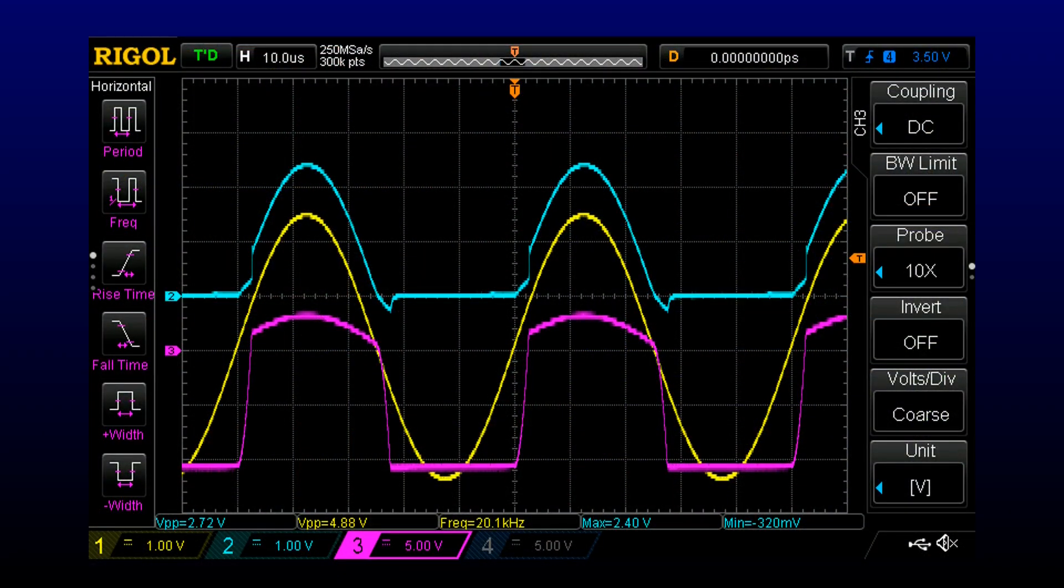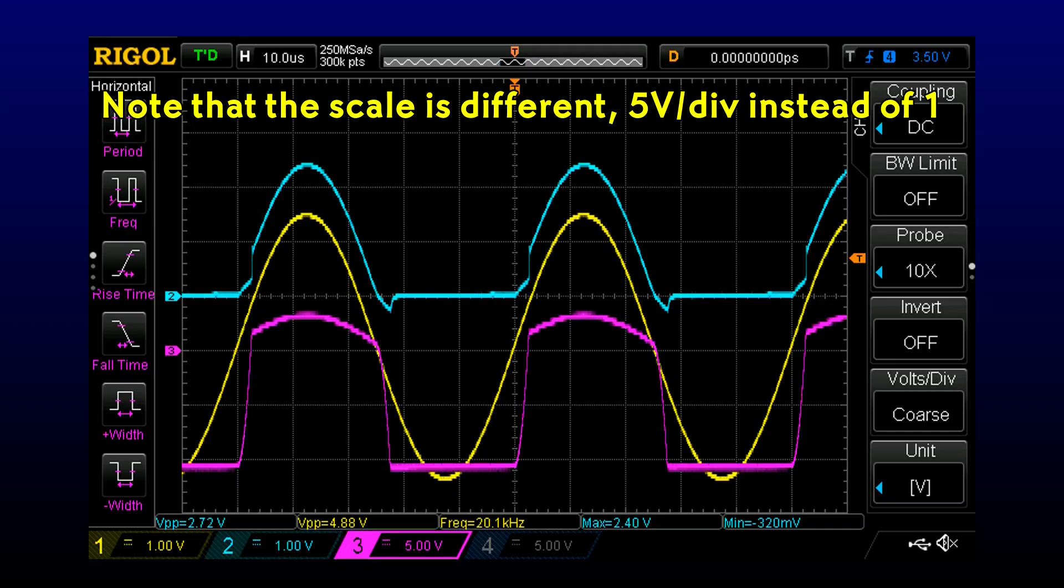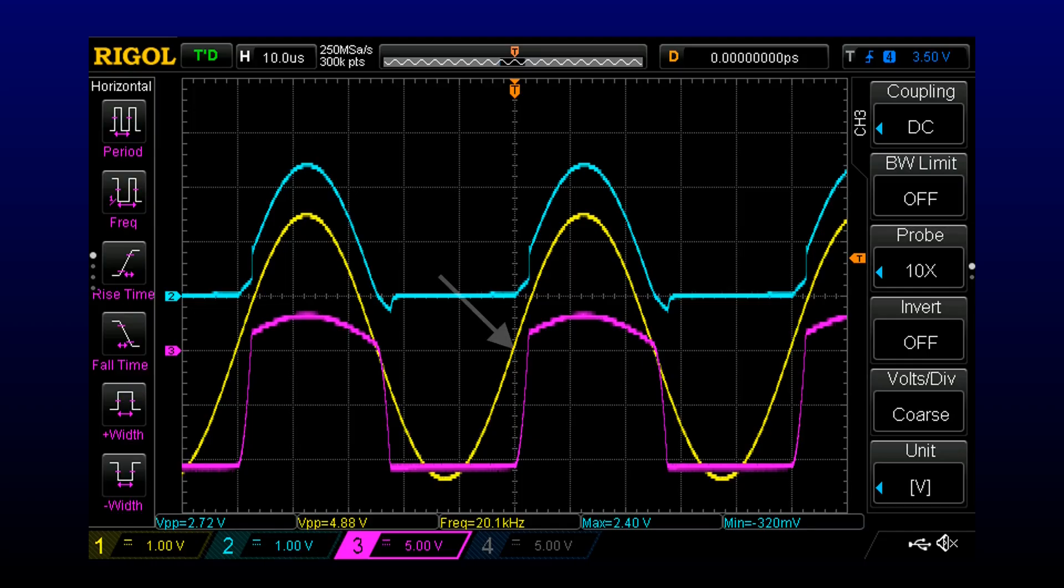To understand what's going on, I hooked a third scope probe up to the op-amp output at the anode of the diode. It's the purple trace on the screen. And it's not too hard to see the major problem, which happens when the input wave crosses the axis in the positive direction.